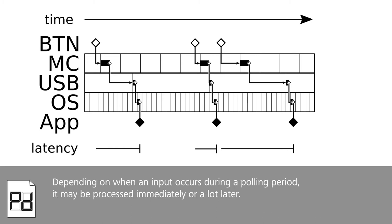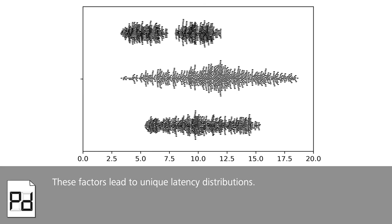Depending on when an input occurs during a polling period, it may be processed immediately or a lot later. These factors lead to unique latency distributions.